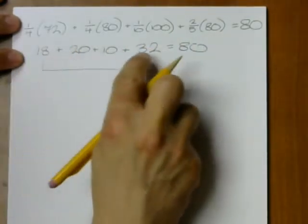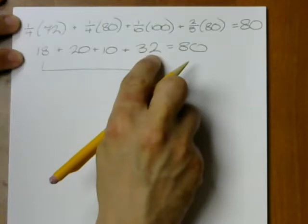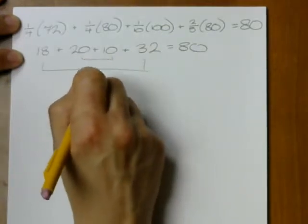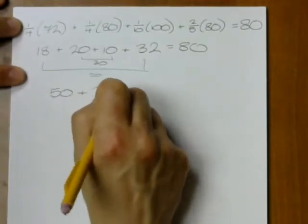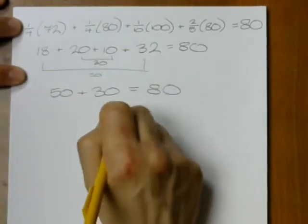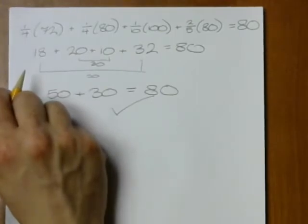Well, the 32 and the 18 together, that makes 50 plus 30. And 50 plus 30 equals 80.